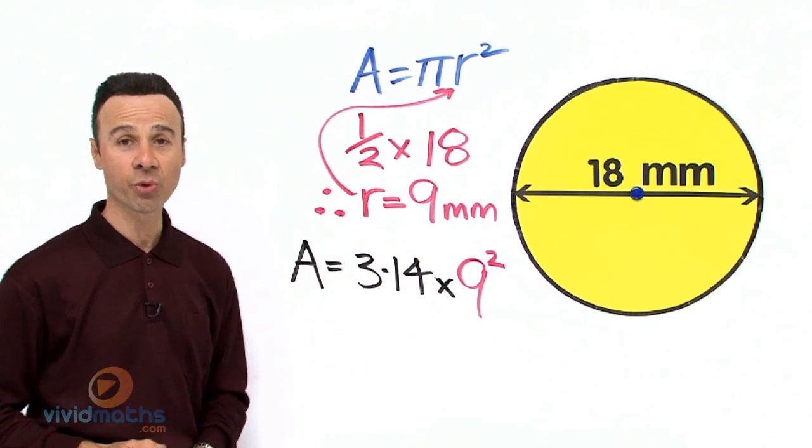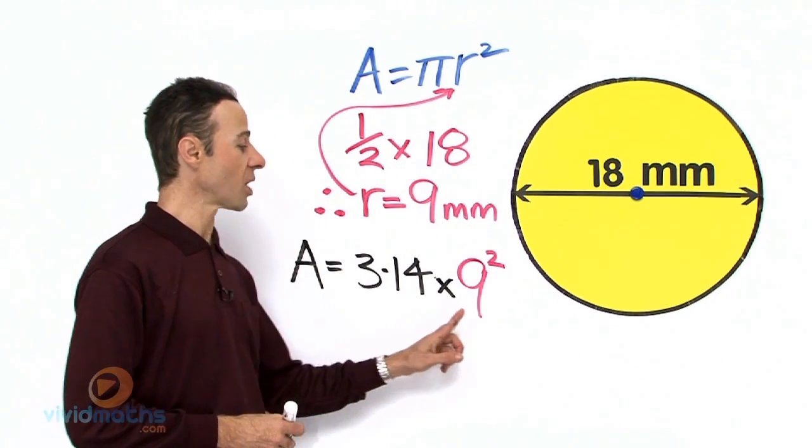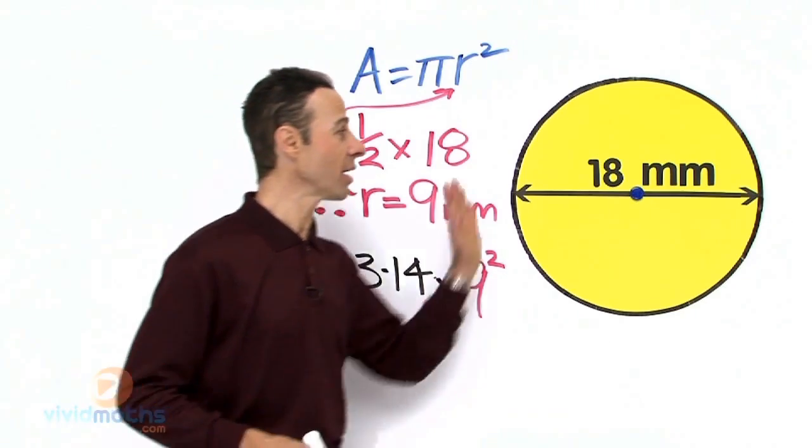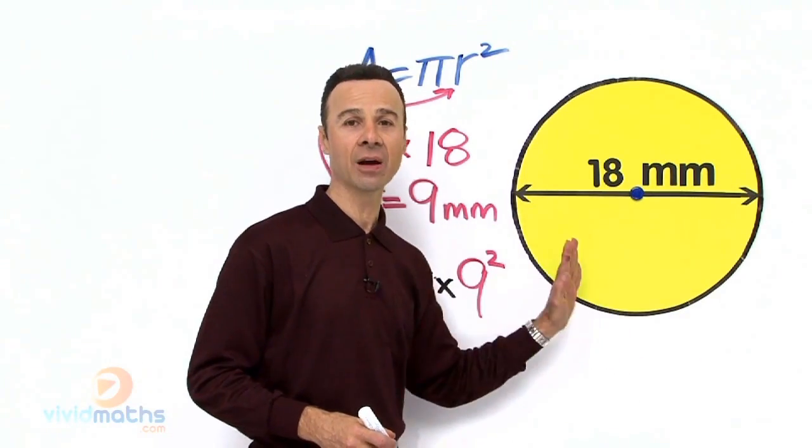So our pi again is 3.14 times 9 squared, which is the radius. Our total and complete area right here in fluoro vivid yellow is...